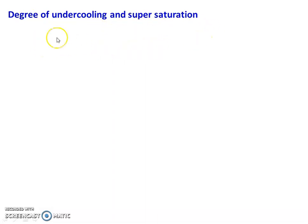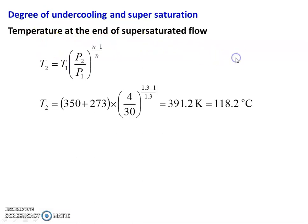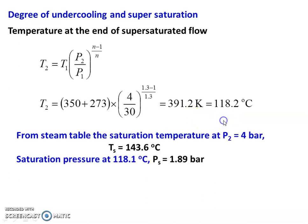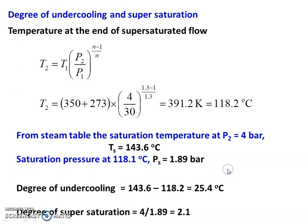To calculate degree of undercooling and supersaturation: temperature at the end of supersaturated flow T2 = T1 × (P2/P1)^((N-1)/N) = (350+273) × (4/30)^((1.3-1)/1.3) = 391.2 K = 118.2°C. From steam table, saturation temperature at P2 = 4 bar is 143.6°C. The saturation pressure at 118.2°C is P = 1.89 bar. Degree of undercooling = 143.6 - 118.2 = 25.4°C. Degree of supersaturation = actual pressure at exit / saturation pressure at exit temperature = 4 / 1.89 = 2.1.